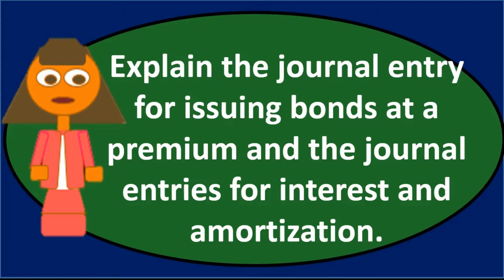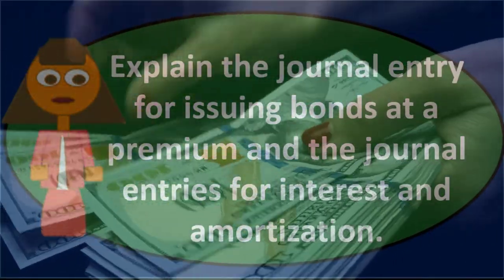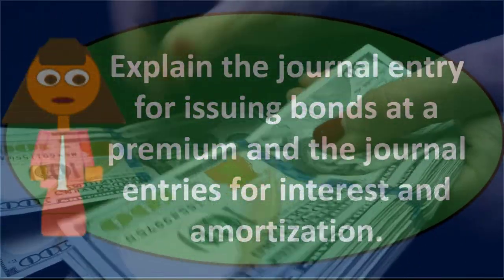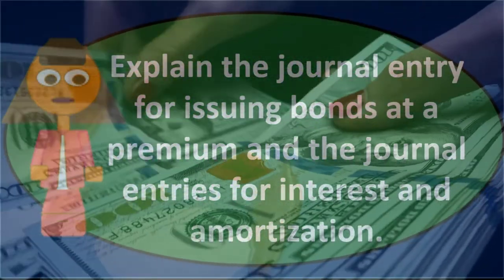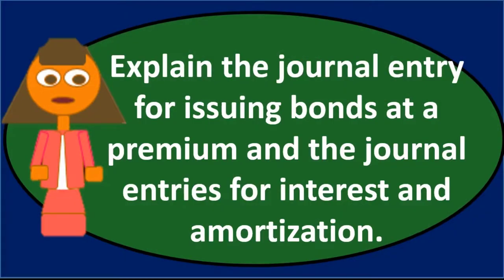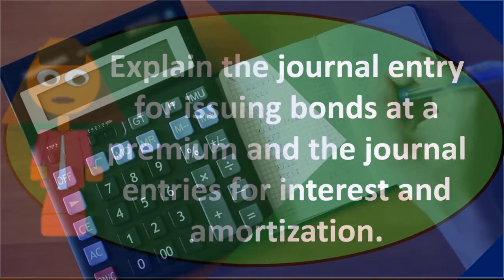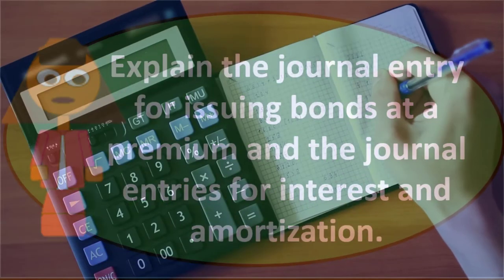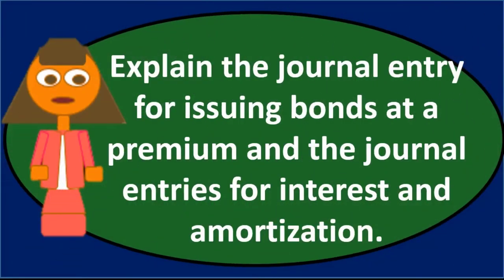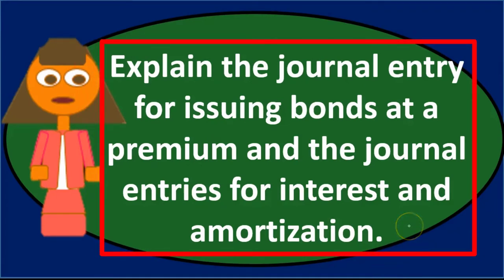The bond itself is just a promise to repay the principal amount and pay interest — the face amount on the bond plus any interest. From there we can think about the journal entries, since the question is asking us for those.